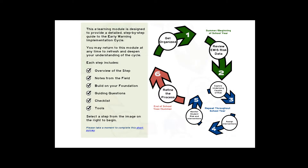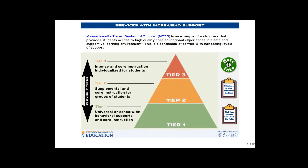Identify students whose needs are not being met and explore the underlying causes of risk. Based on the findings, take action with Tier 1, Tier 2, or Tier 3 supports.